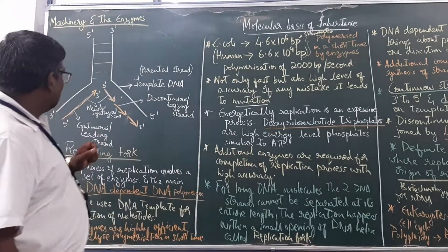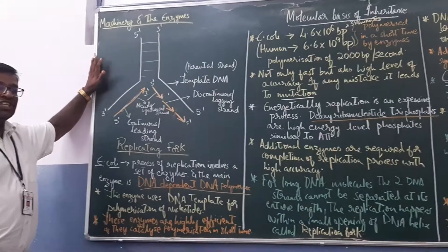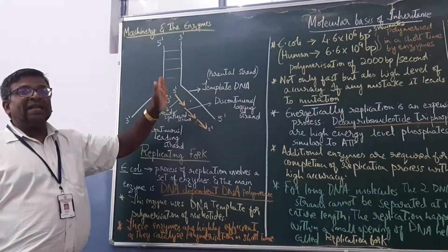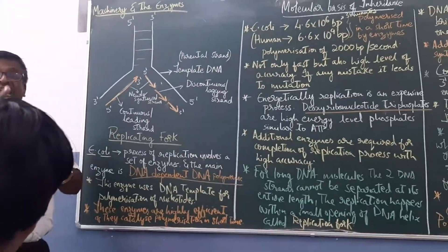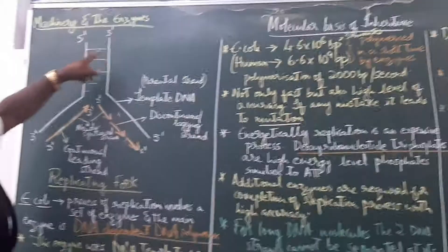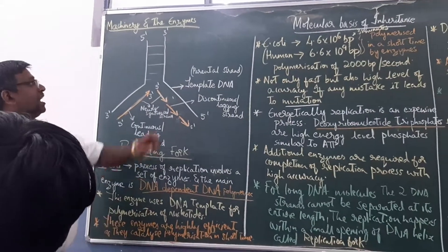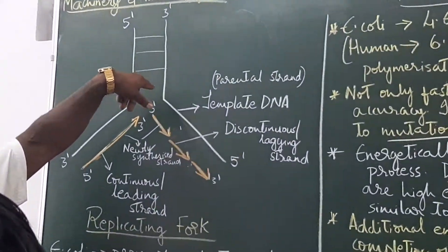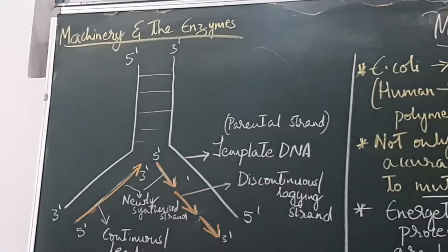In the replication diagram, the DNA has two anti-parallel strands — one running 5' to 3' and the other from 3' to 5'. These strands are held together by hydrogen bonds through complementary base pairing.